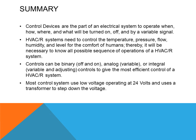To summarize this week's information: control devices are part of an electrical system that determines when, how, where, and what will be turned on and off by a variable signal. HVAC and refrigeration systems need to control temperature, pressure, flow, humidity, and level for human comfort. Controls can be binary — off and on — analog, which is variable, or integral, which is variable and adjusts automatically.